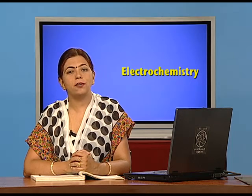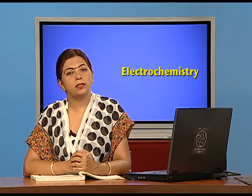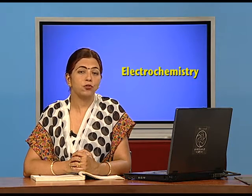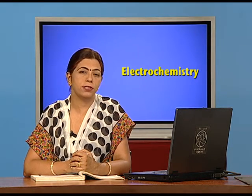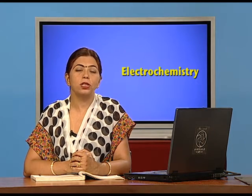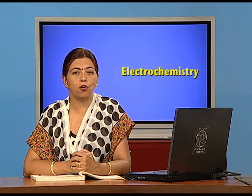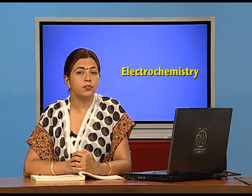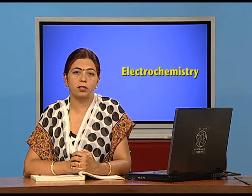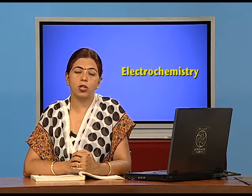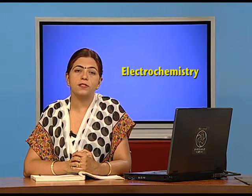In summary, the dry cell has an anode and cathode with actual transfer of electrons responsible for producing electricity. Primary batteries cannot be recharged and are discarded once used up, unlike secondary batteries which are rechargeable. The dry cell is a common example of a primary battery used in daily life.